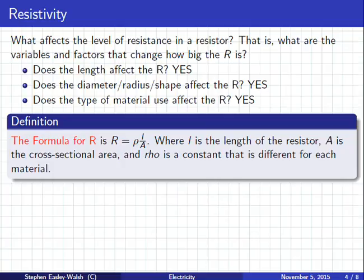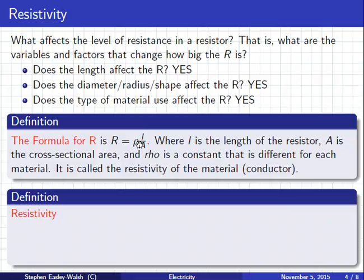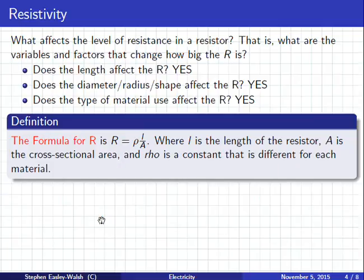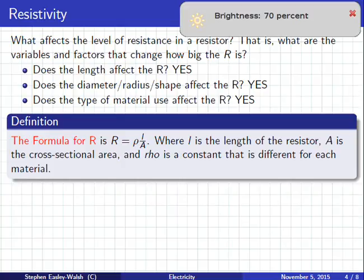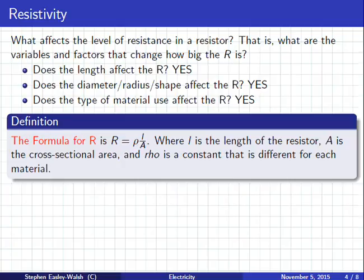So my question now is, there's my resistor and there's resistance in it. What do you think affects the level of resistance? For example, how do you think the ohm will change? Do you think the length affects it? More. Yes, it does affect it. What about the diameter or the radius or the shape? It affects it. Bigger makes more or less? Bigger makes less resistance. And the type of material? Yes, of course.